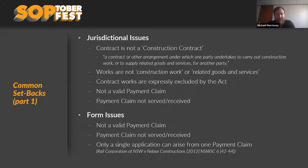There could be works expressly excluded by the Act — those exclusions were narrowed with the 2019 amendments. Another big problem is not having a valid payment claim, particularly one served on the incorrect party — someone who isn't a party to a construction contract, or where there isn't a construction contract between the parties. We also see payment claims not being properly served or received, and people sending multiple payment claims instead of one consolidated claim.